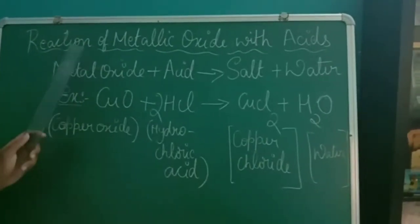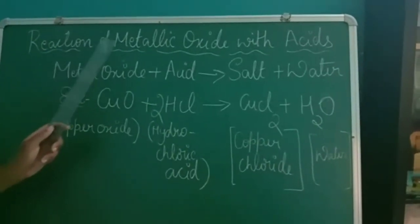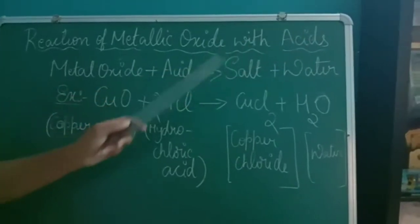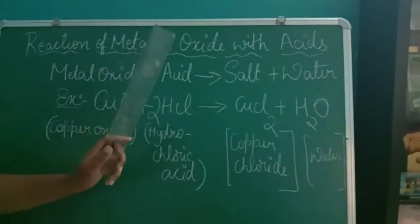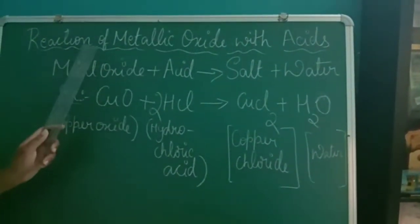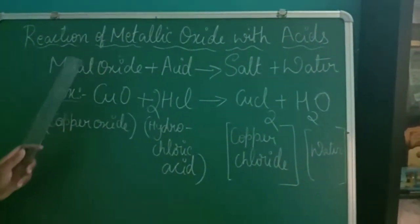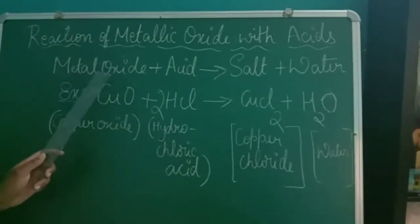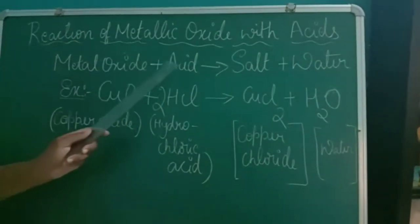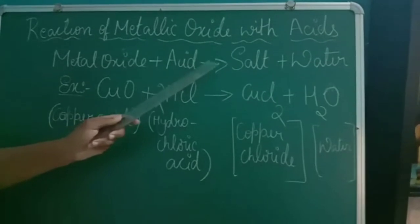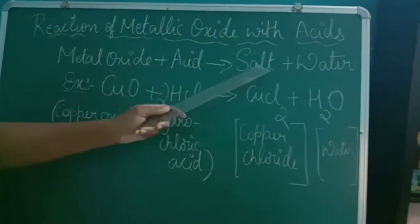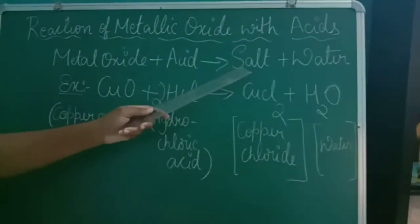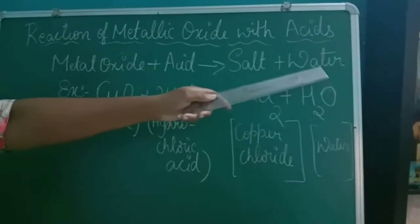Now let us learn how if metal oxide reacts with acid, what product is obtained. So, now we are taking a metal oxide. When we react this metal oxide with an acid, we obtain two different products — those are salt as well as water.